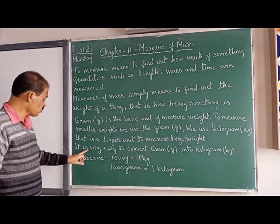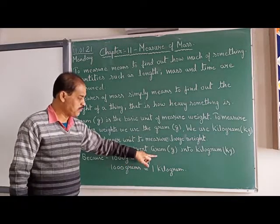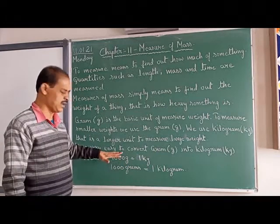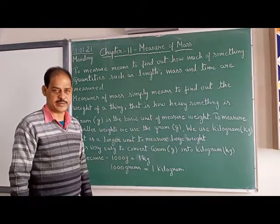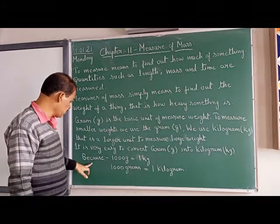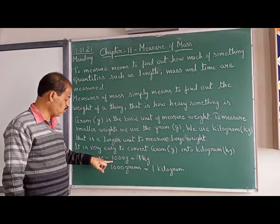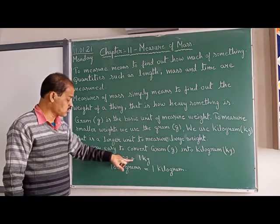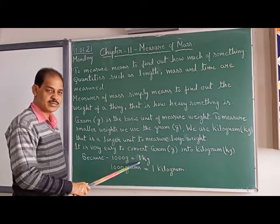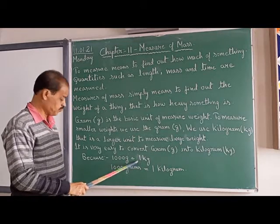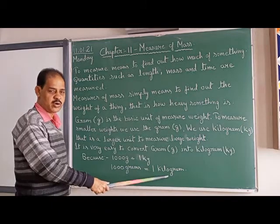It is very easy to convert grams into kilograms. Because one thousand grams equals one kilogram — 1000 gram equal to one kilogram.